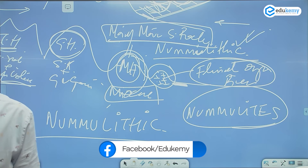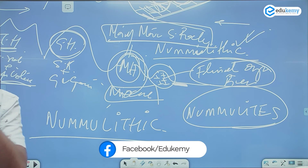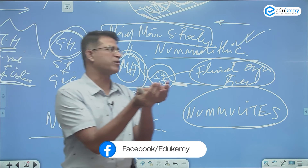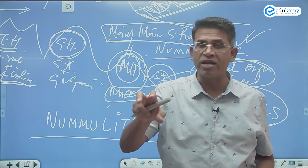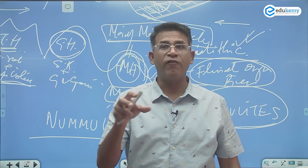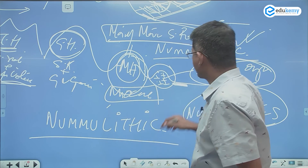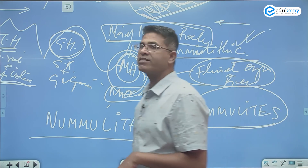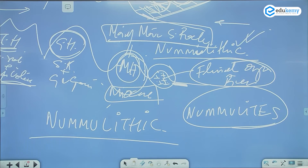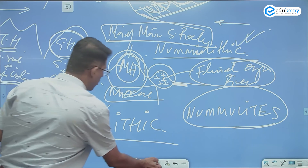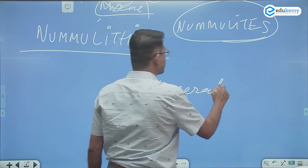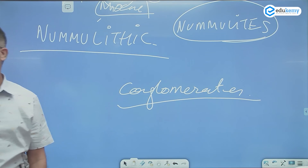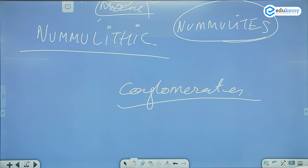How do we know the Shivaliks are of fluvial origin? Because the rocks have boulders, stones, and are rounded in nature. Wherever rocks are rounded, it's because of a river process — rocks rolling down and becoming round in shape. The presence of fluvial-origin stones tells us that the Shivaliks are not marine but of fluvial origin.